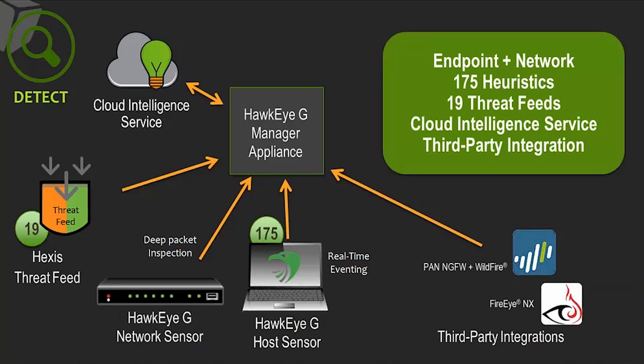We have 175 different heuristics, which is non-signature detection — the ability to find malware without signatures. We have a threat feed that brings in early warning indicators of compromise and a cloud intelligence service to verify commodity malware and infection spread. Through supported platforms like Palo Alto, Extramation Firewall with Wildfire on-premise or cloud sandboxing, and the FireEye NX platform, we can bring in those threat indicators and malware objects into a unified view in the Hawkeye G manager appliance.